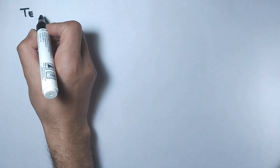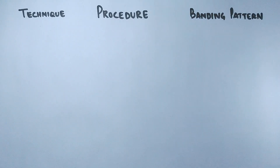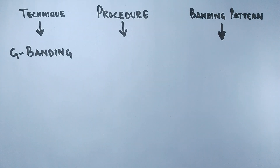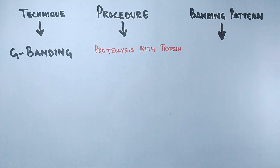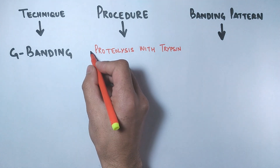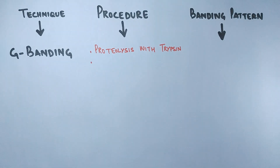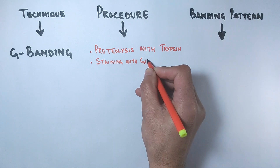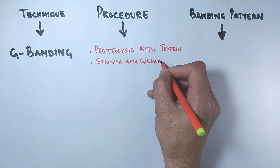Now let's look at the different chromosome banding techniques used in cytogenetics. The first important banding technique is G-banding, which gets its name from the Giemsa stain used in it. First, the metaphase chromosomes are treated with trypsin, which partially digests the chromosomes — basically digesting the proteins. After trypsin treatment, the chromosomes are stained with Giemsa.